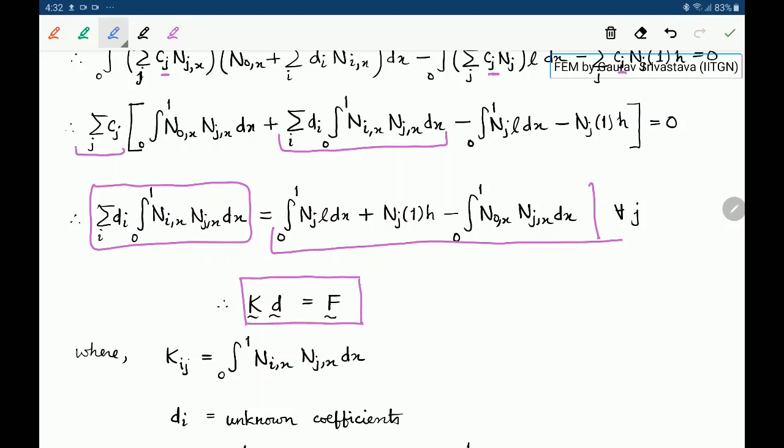Where Kᵢⱼ is essentially this integral expression. This Kᵢⱼ has two indices, so Kᵢⱼ is a matrix. And you will realize that this Kᵢⱼ is being multiplied to dᵢ. So this is K times d.